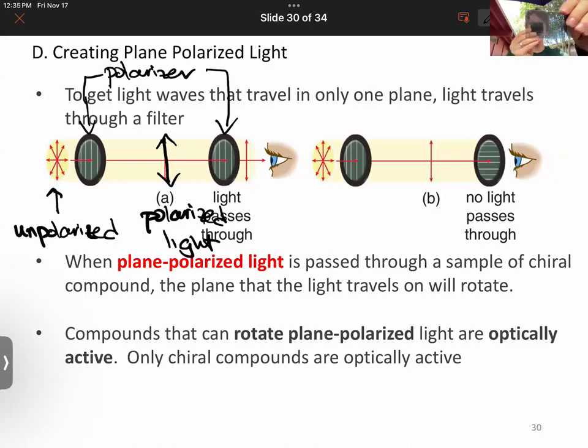And now what we're going to do is between the two polarizers, we're going to put a chiral compound dissolved in water, usually, though it could be dissolved in other things. And what we're going to see is that's going to affect the polarization of the light. And compounds that can rotate plane-polarized light are optically active. And only chiral compounds are optically active.